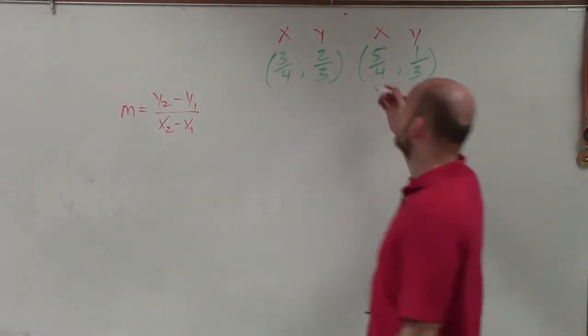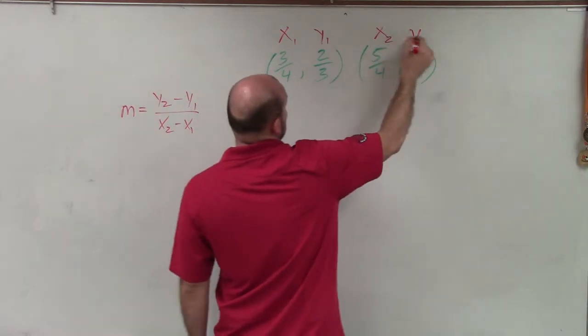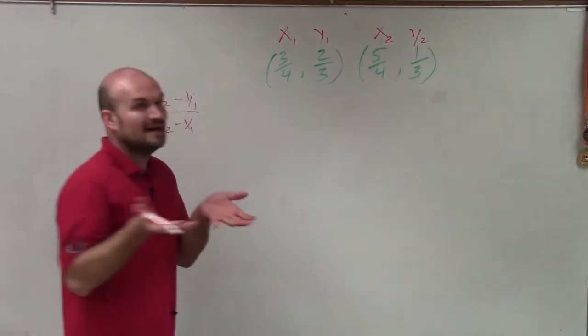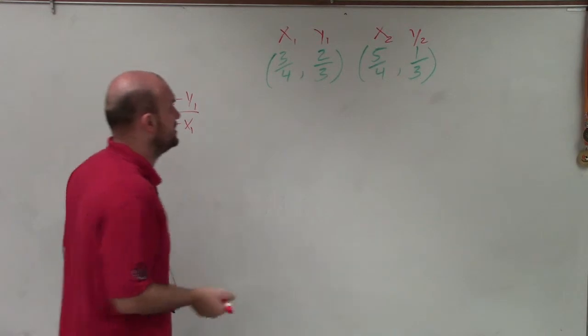So to distinguish them, we'll say this will be x1, this will be y1, this can be x2, and that will be y2. Now we can just simply go ahead and subtract one from another.